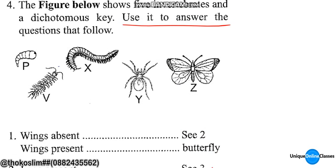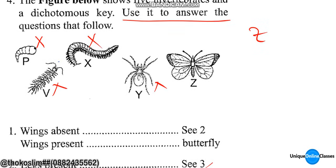Wings absent — you can see we have wings, wings, wings — so wings present: it's a butterfly. That's a butterfly — Zed is a butterfly.